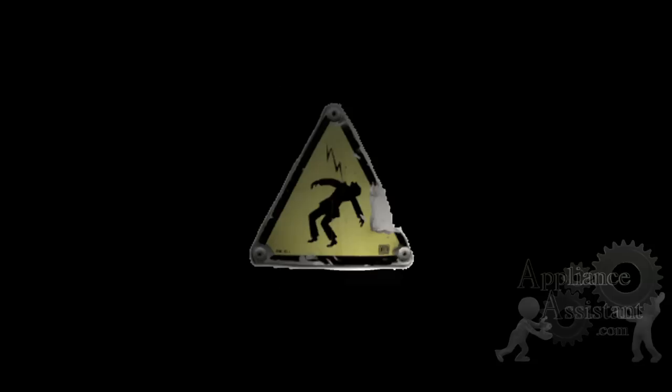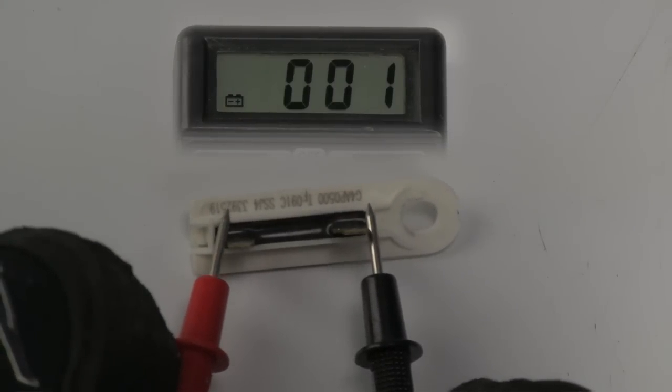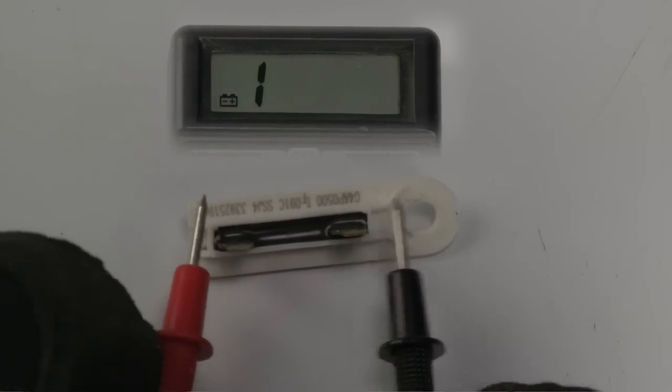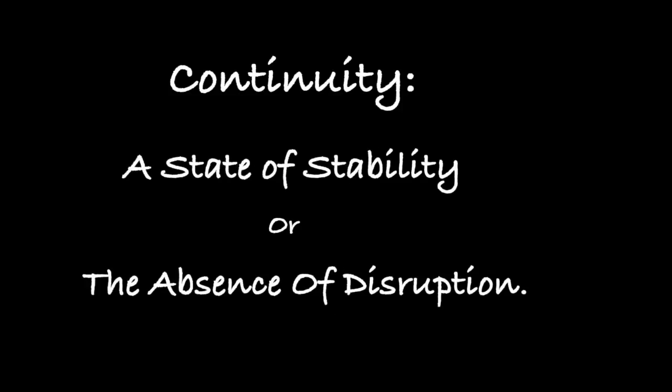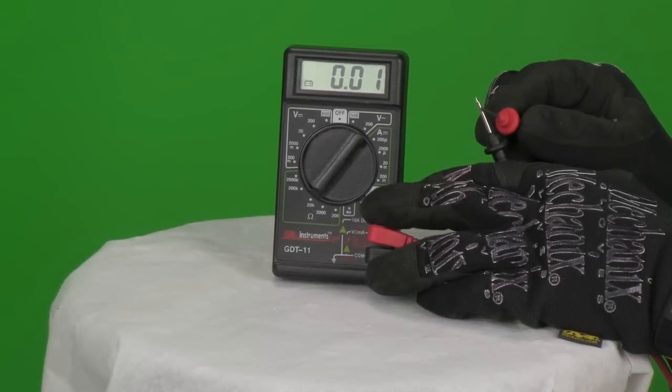Getting shocked hurts and if you're well grounded it can kill you. Testing for continuity is very simple and also extremely useful for troubleshooting all kinds of electrical and appliance related puzzles. Continuity is defined as a state of stability or the absence of disruption. With electricity it is used to describe a closed circuit or electricity's ability to flow freely.